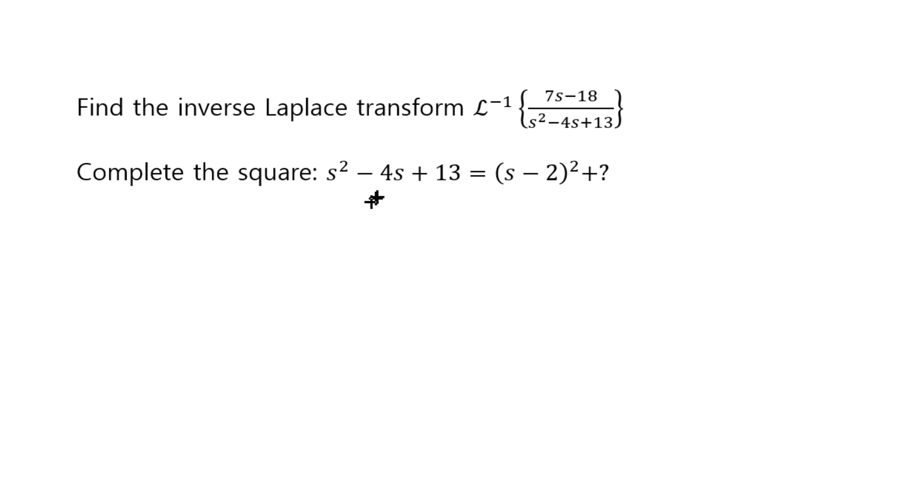Now, first, this middle number, negative 4, is taken half of it, and you get negative 2. That's how you determine this number. That's the first step.